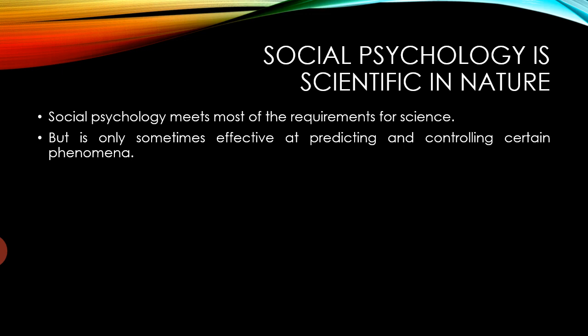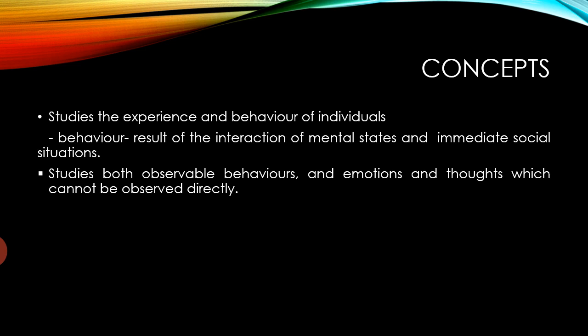Prediction and controlling phenomena is sometimes effective, but it is not fully effective. In social psychology, we study the experience and behaviour of individuals. Behaviour can be said to be the result of interaction between mental states and the immediate social situation. So behaviour can be viewed as a function of person and environment. We study both observable behaviours and the emotions and thoughts which cannot be directly observed, and we also study culture in social situations.